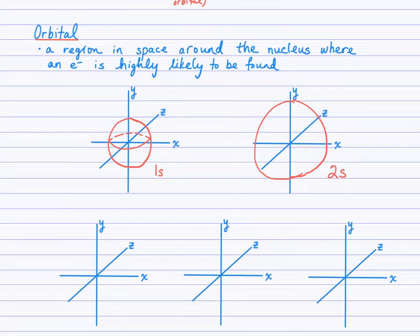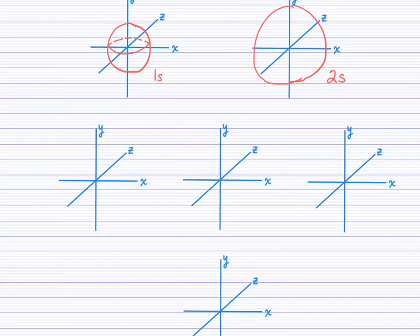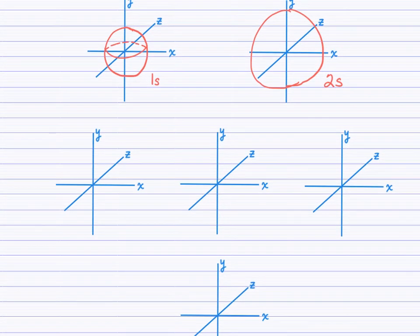Now, the other shape that you're responsible for are the P orbitals. P orbitals orient themselves along each of the axes in a dumbbell shape. And so they are double-lobed, and as you can see, this is the PX orbital, oriented along the X axis. If we orient that dumbbell shape along the Y axis, this is known then as the PY orbital.